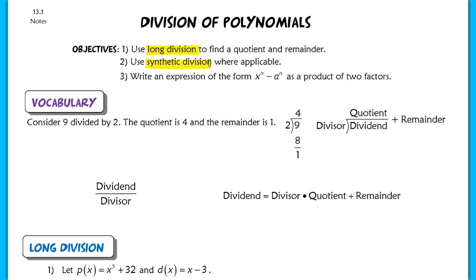We're also going to do something brand new: write an expression, or factor x to the n minus a to the n, and be able to write that as the product of two factors. So we're going to take an expression in this form and figure out how to factor that.